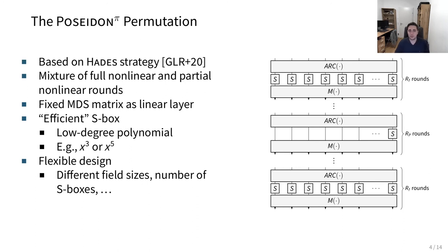That brings me to the Poseidon permutation. This is the Poseidon π permutation, based on the Hades design strategy which was proposed last year. The idea of this strategy is to use a mixture of full nonlinear and partial nonlinear rounds. This can be seen in this picture here, where we have some rounds with full nonlinear layers, here partial ones, and at the end again full nonlinear layers. In each of the rounds, as the linear layer, we use an MDS matrix, a fixed one.